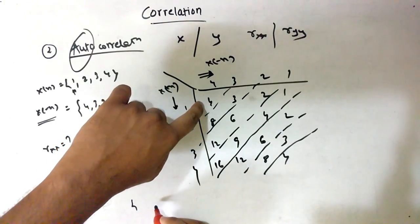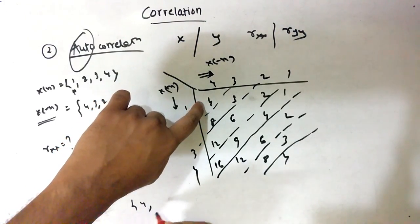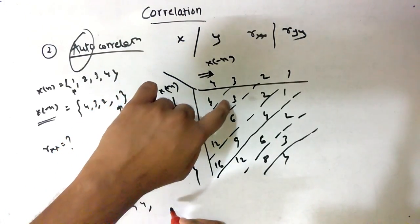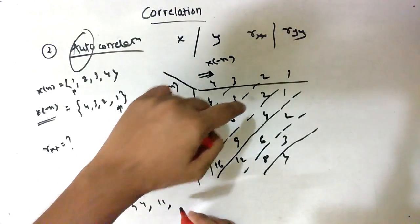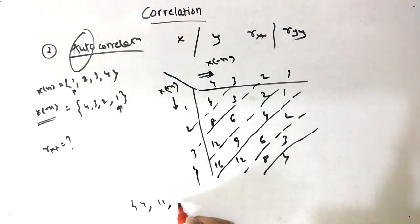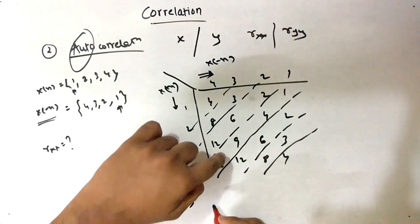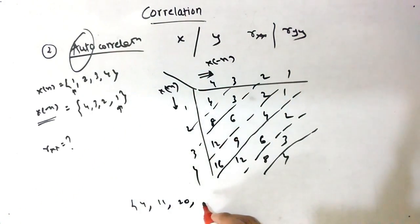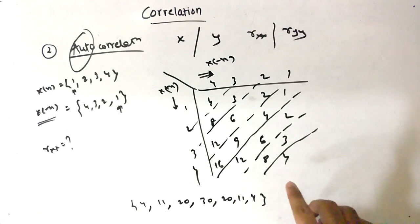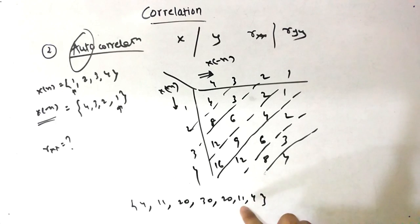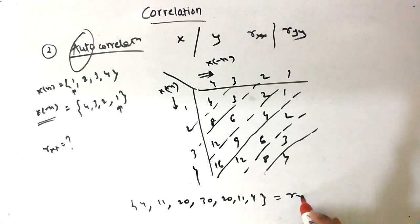Adding diagonally, we get the values: 4, then 8 plus 3 is 11, then 12 plus 6 plus 2 is 20, then 16 plus 9 plus 4 plus 1 is 30. And the rest of them: 20, 11, and 4. You can see the symmetry — 4 here, 11, and so on. So this is our R_XX.